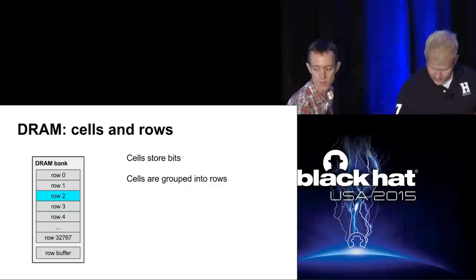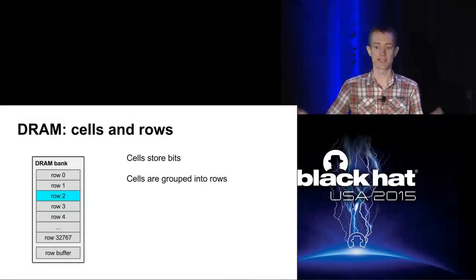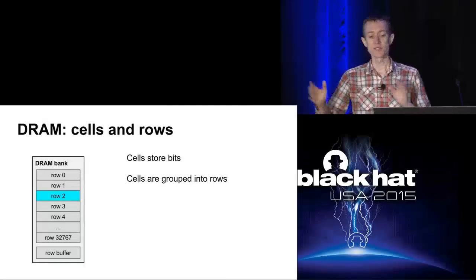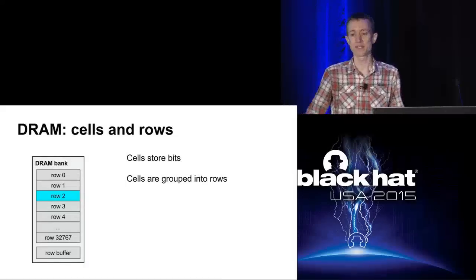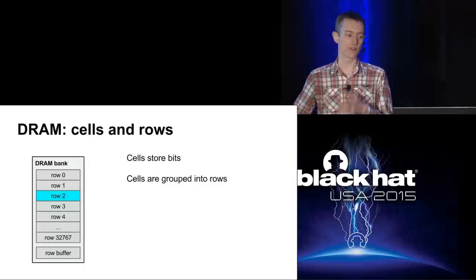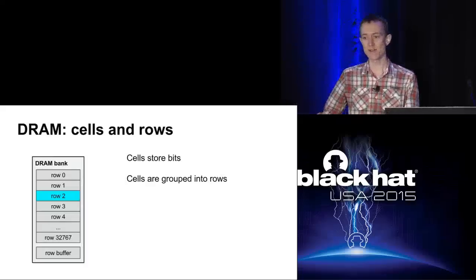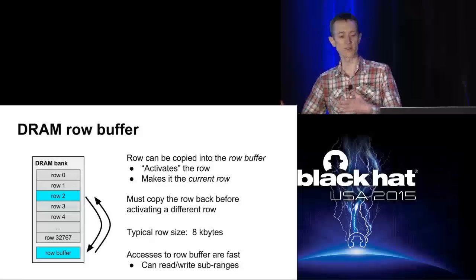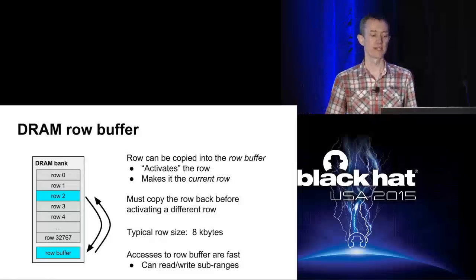Now I'll talk about Rowhammer specifically, but first I'll give an intro on how DRAM works. DRAM is the main memory of a computer - short for dynamic RAM. A bank of DRAM basically consists of a big array of cells where each cell stores one bit. The circuitry for a cell is very simple and compact - just a capacitor and a transistor - and the presence or absence of charge on that capacitor indicates whether it's storing a zero or a one. Because this arrangement is so simple, cells can't be accessed individually. Instead DRAM is divided into rows, and you can only access one row at a time. If the system wants to access a particular row, it has to first tell the bank to activate that row.